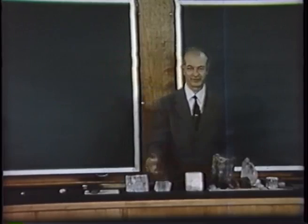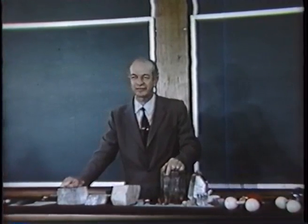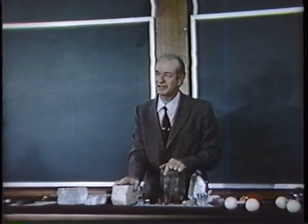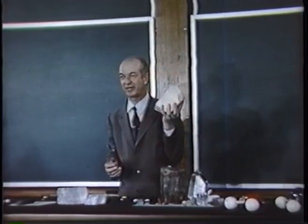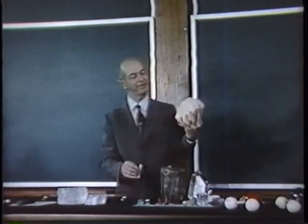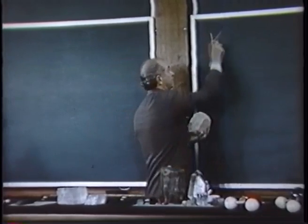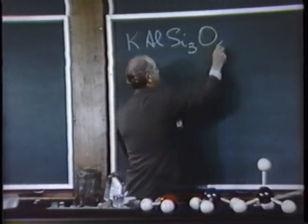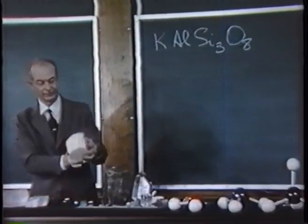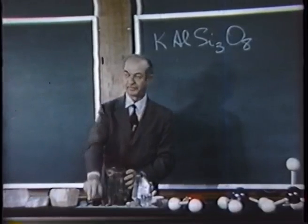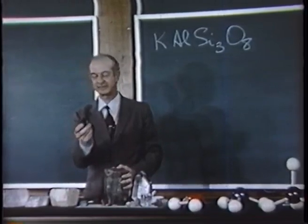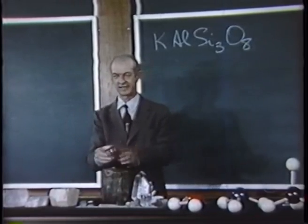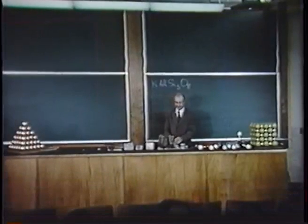This property of cleavage is determined by the structure of the crystal. Another interesting example of correlation between structure and properties is provided by the silicate minerals. Here I have a natural crystal of feldspar — orthoclase feldspar. The formula of this feldspar is KAlSi3O8. It is a potassium aluminosilicate. These other crystals: beryl, Be3Al2Si6O18; garnet, Mg3Al2Si3O12; tourmaline; silica, quartz, SiO2.